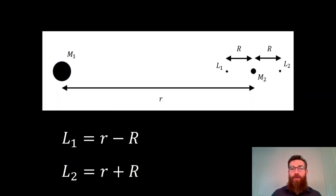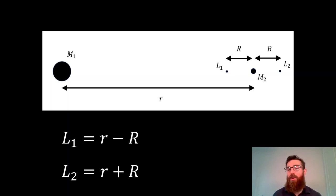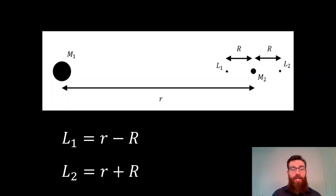Let's reduce it down to one dimension. You've got M1 and then M2, and the distance separating them is called R. The L1 and L2 Lagrange points are located at some distance — we call it uppercase R — from M2. So we can write the L1 and L2 locations as R minus r and R plus r respectively.